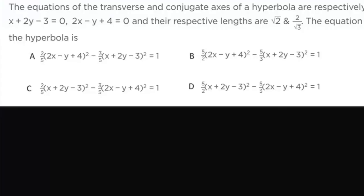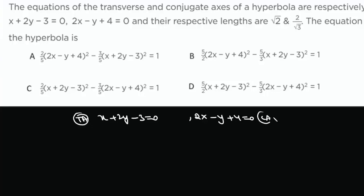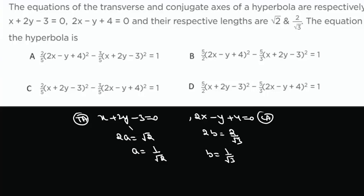Next example: the transverse and conjugate axes of a hyperbola are x + 2y - 3 = 0 and 2x - y + 4 = 0 respectively, with lengths √2 and 2/√3. So 2a = √2, giving a = 1/√2, and 2b = 2/√3, giving b = 1/√3.